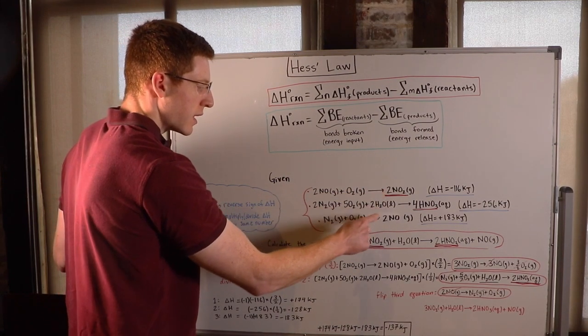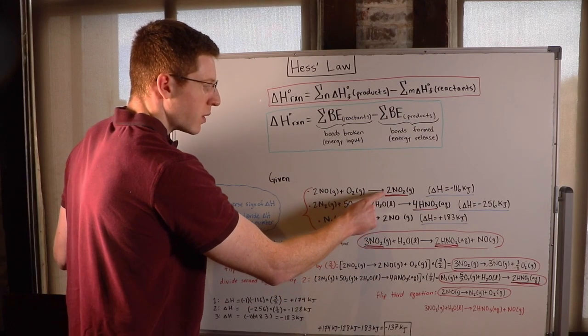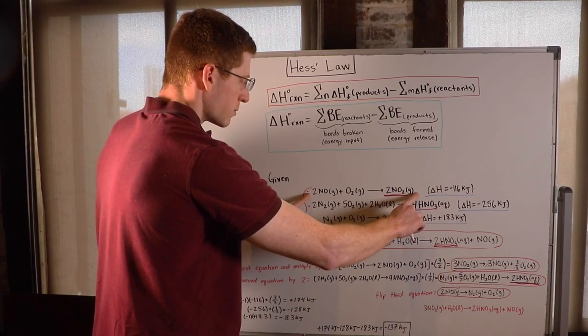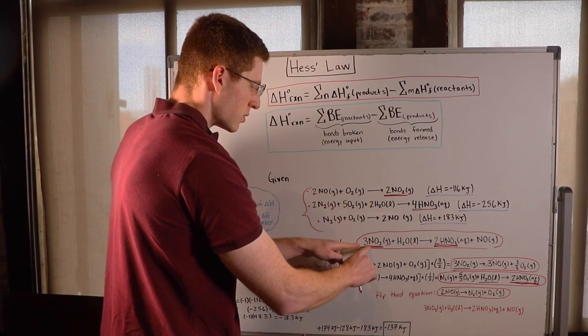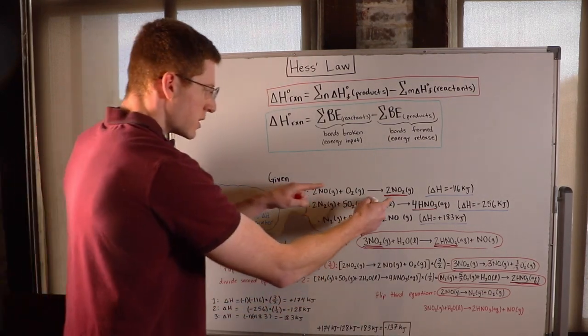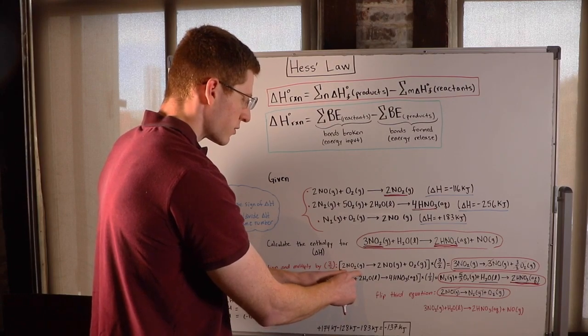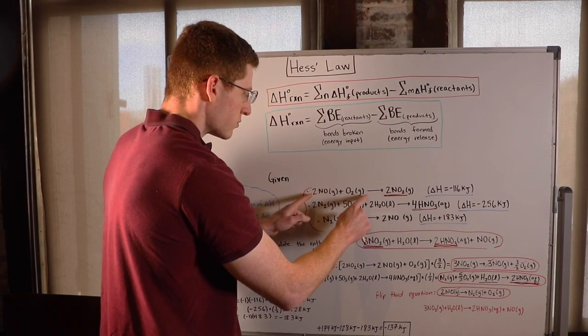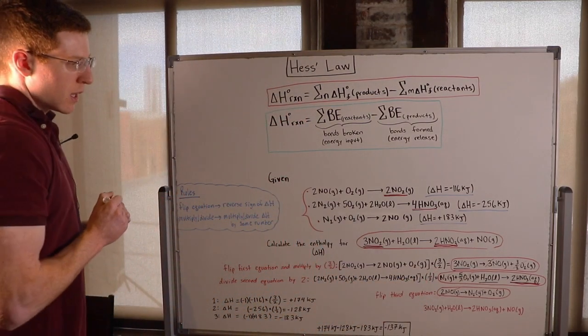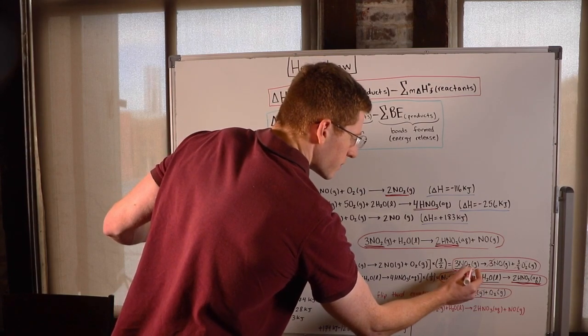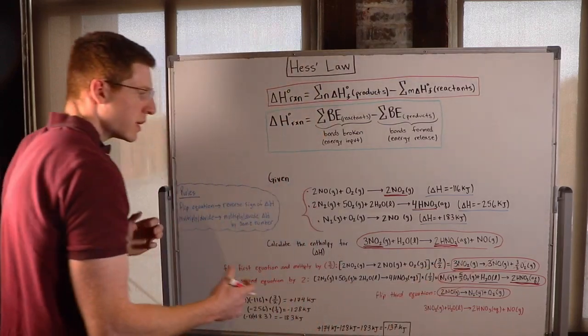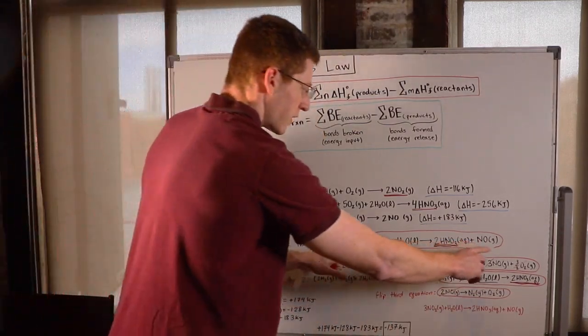And since this is a 2 and this is a 3, I'll have to multiply this whole equation by 3 over 2 to change this 2 into a 3. So that was the first thing I did down here. I flipped this first equation. So now 2NO2 is in the reactant side and these reactants are on the product side. And then I multiplied it by 3 over 2. So you can see now that I have my 3NO2 on my reactant side, just like I need. So I'm slowly inching towards this final equation.